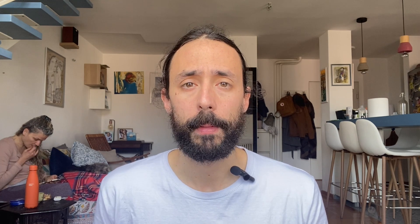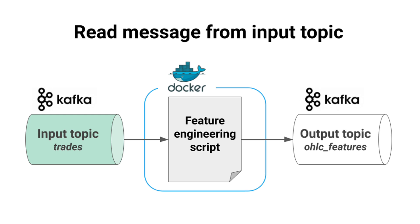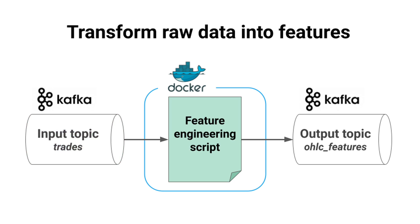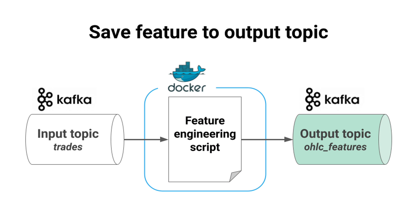Step three: write the feature engineering logic. Our script needs to do three things: first, read input messages from a Kafka topic; second, perform transformations — in this case stateful window operations; and third, save the final features into another Kafka topic.